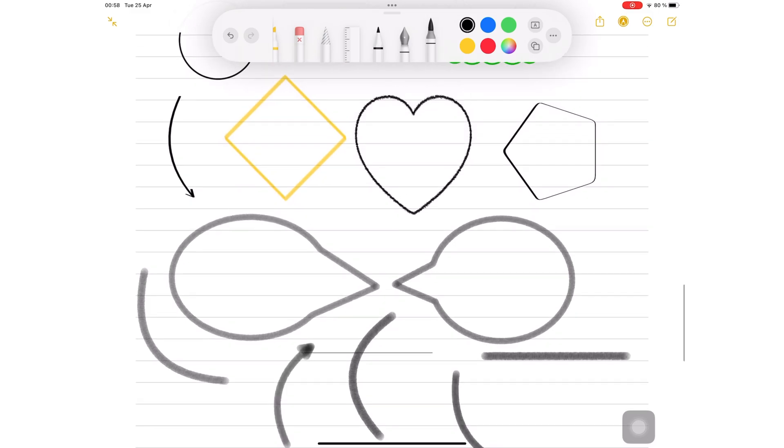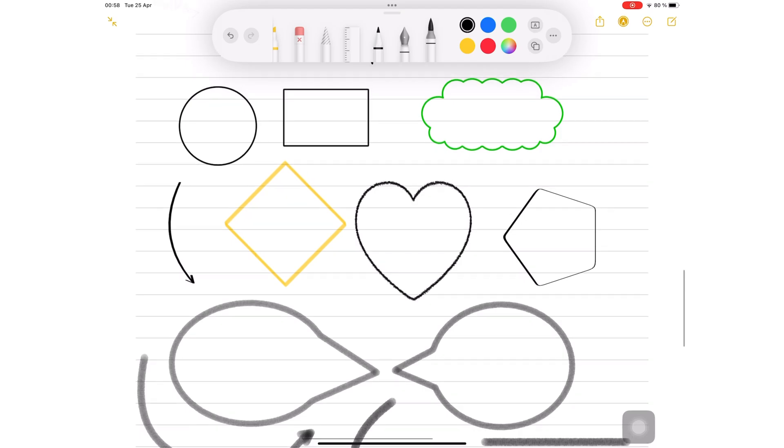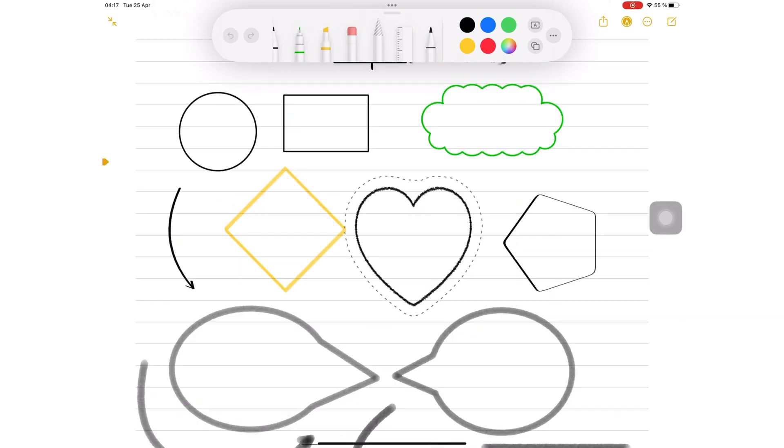Once you've drawn a shape this way, you can't modify it in any way except move it around the page using the lasso tool.